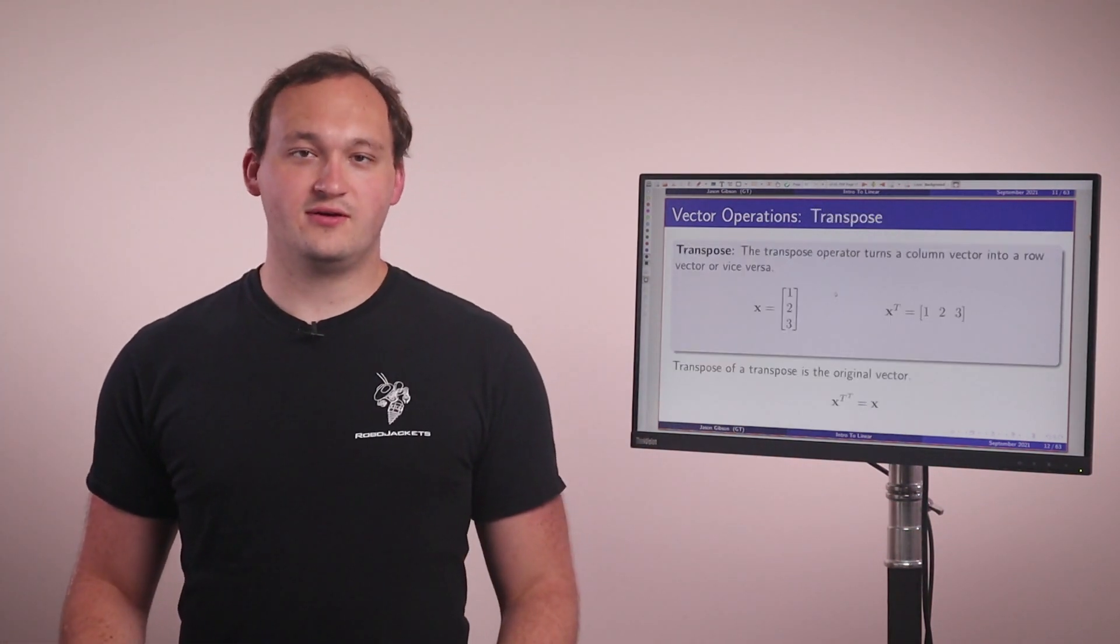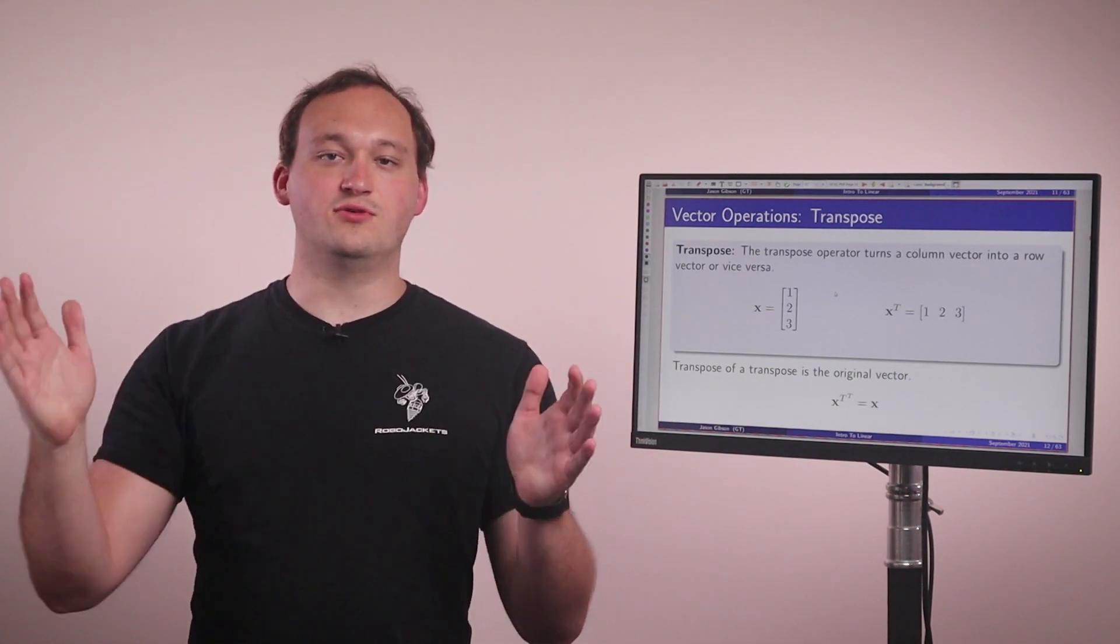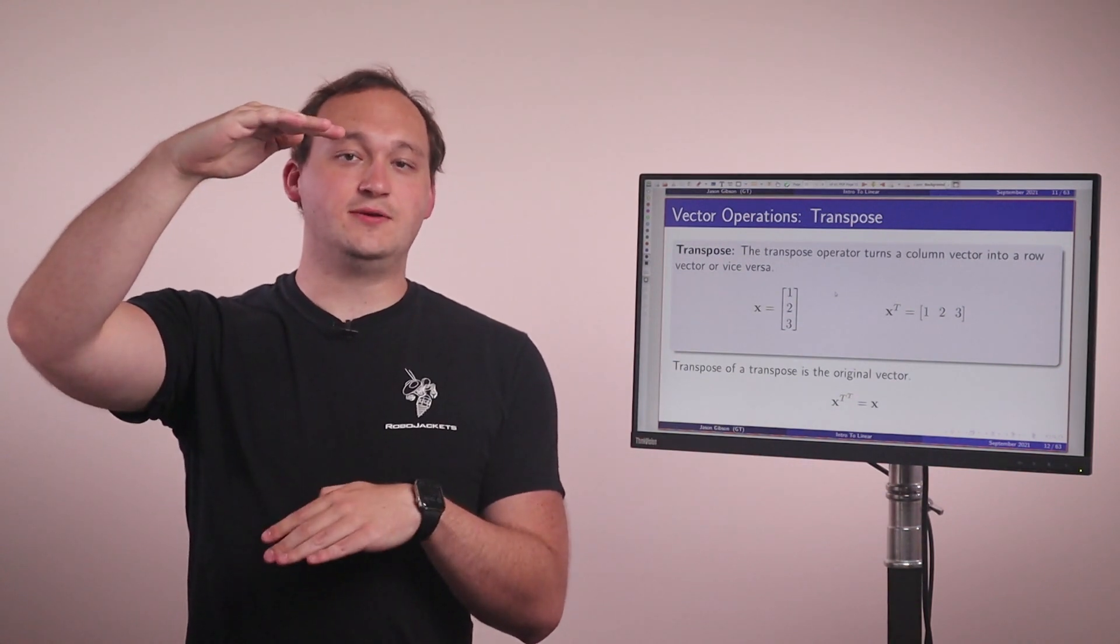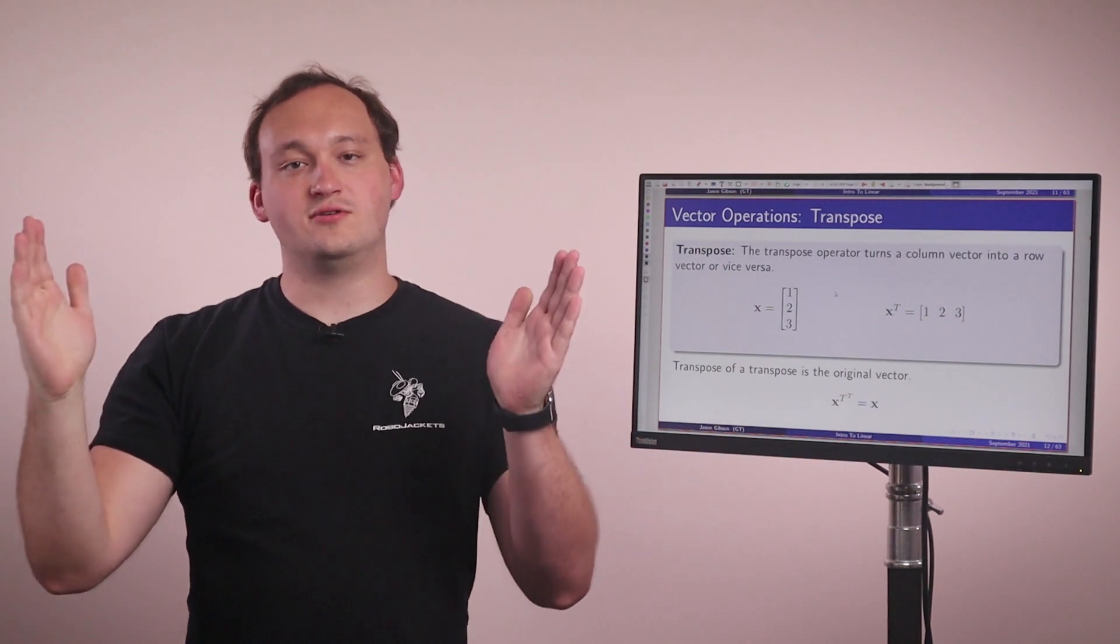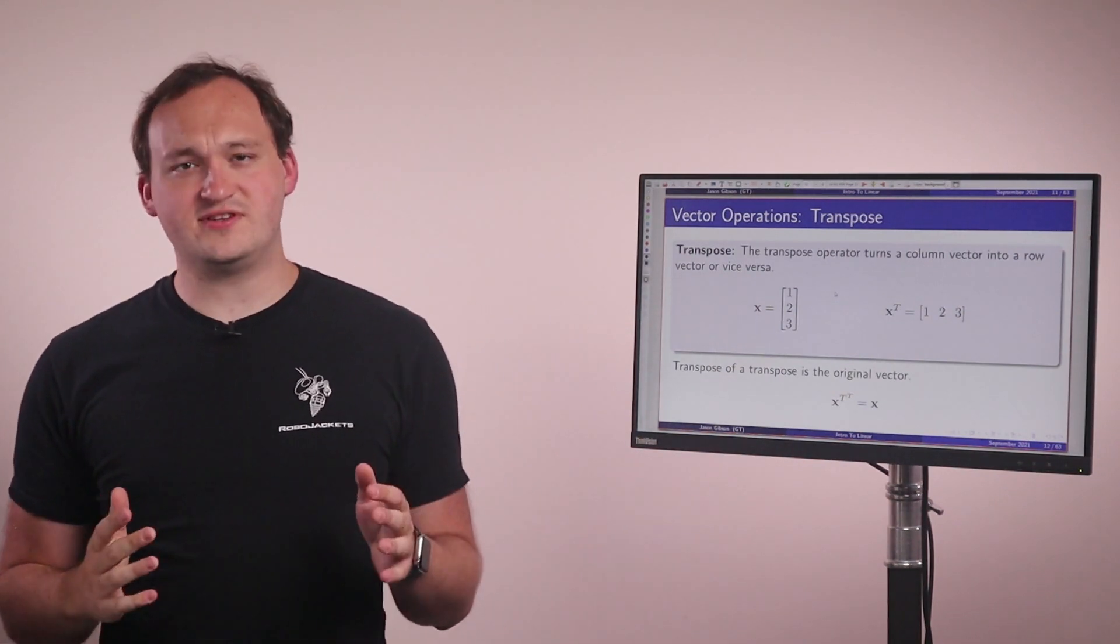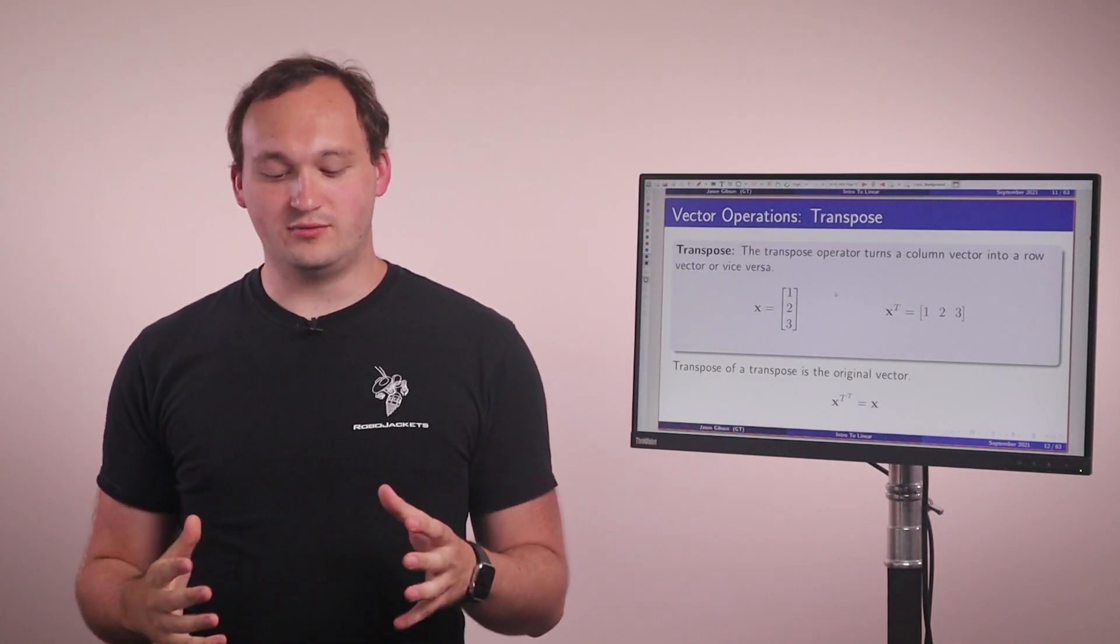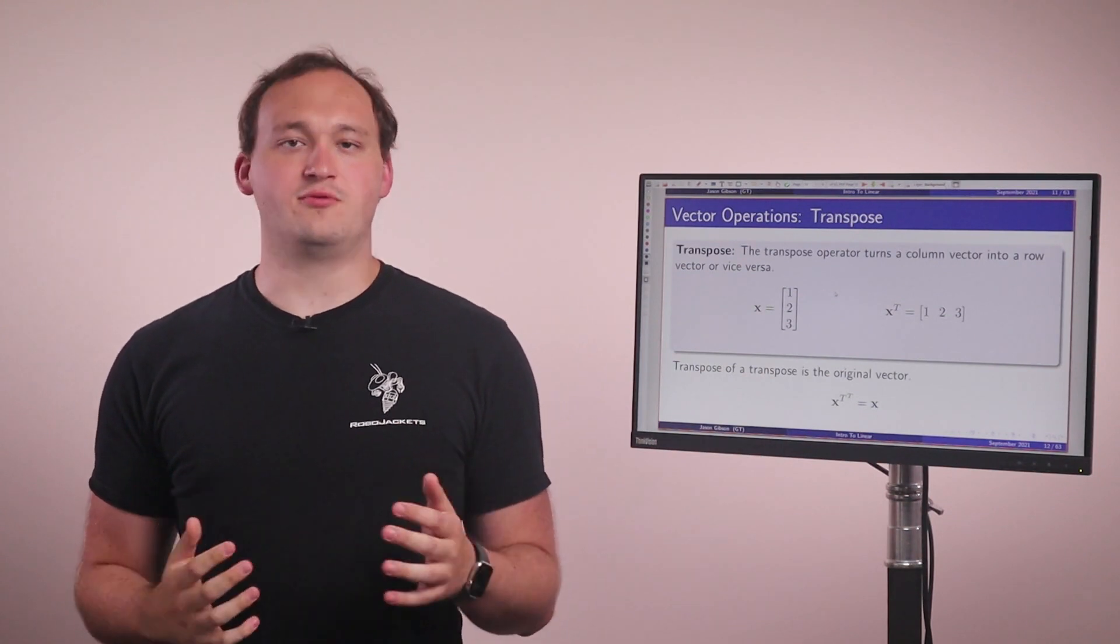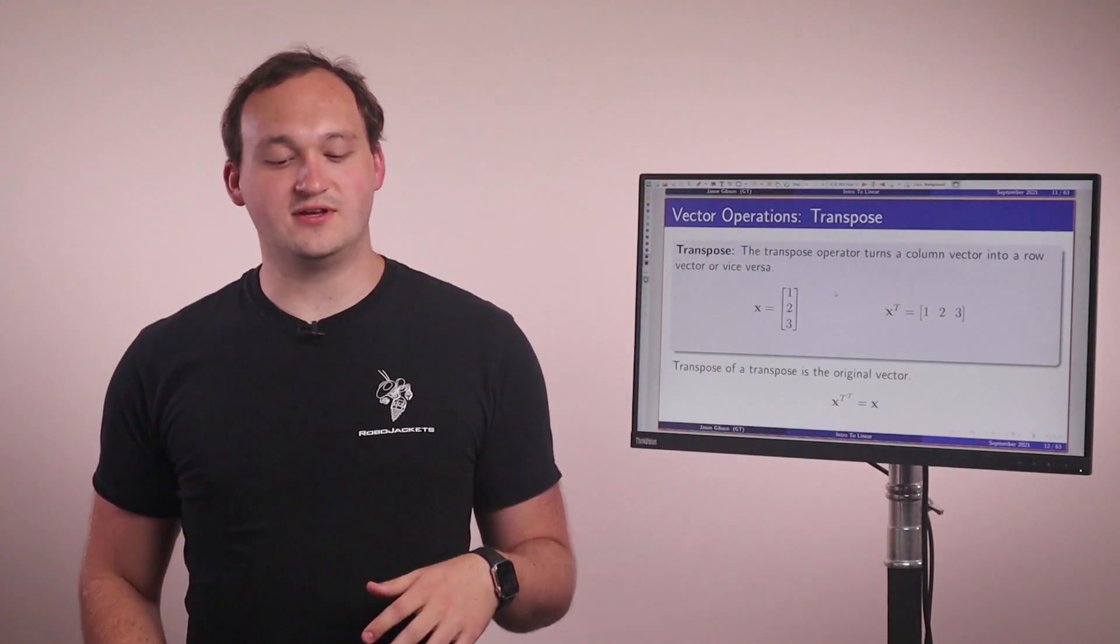Next we have the transpose operator. The transpose operator allows us to convert from a column vector into a row vector. So a column vector is what we've been talking about mostly previously. And this is just the standard way we define vectors, but there's also row vectors, which essentially is going like this. They're very similar, it's just what orientation we're talking about, and this will come up later when we do a little bit more interesting math. So the important property to remember is that the transpose of a transpose is just equal to the original vector itself.